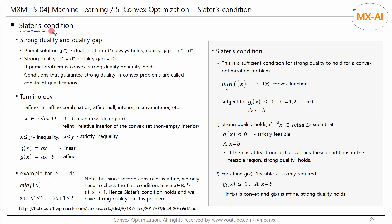Next, let's look at the Slater's condition. In general, the primal solution is always greater than or equal to the dual solution. This difference is called the duality gap. When the primal and dual solutions are the same, it is called strong duality, and the duality gap is zero. If the primal problem is convex, strong duality generally holds, though this isn't always the case. Conditions that can guarantee strong duality in convex problems are called constraints qualifications.